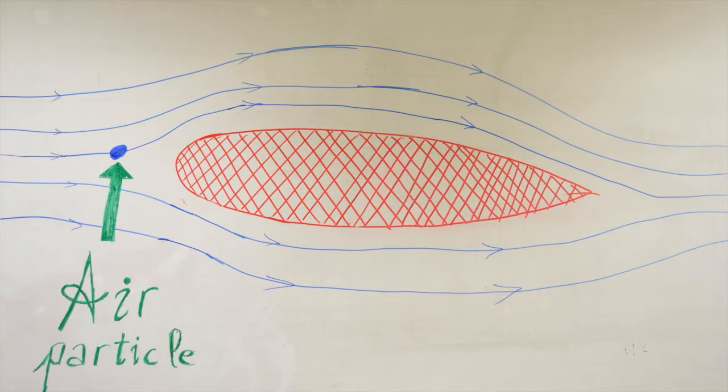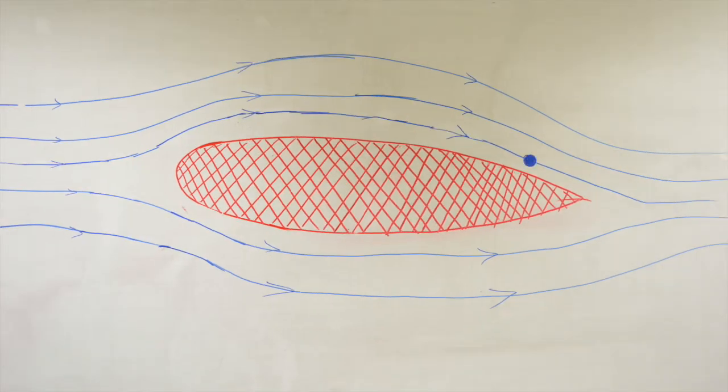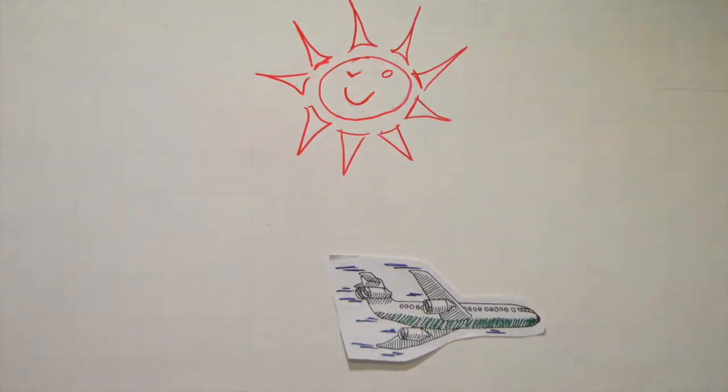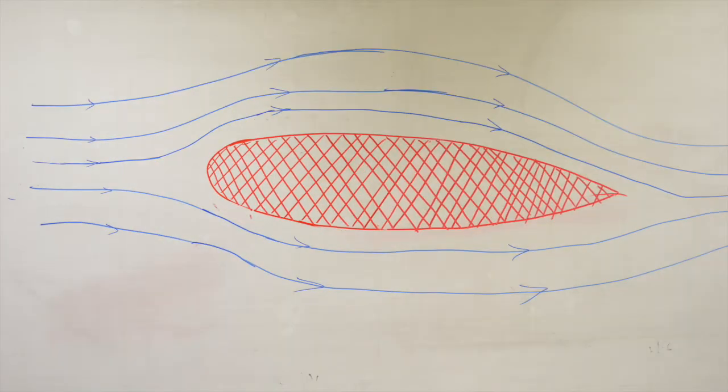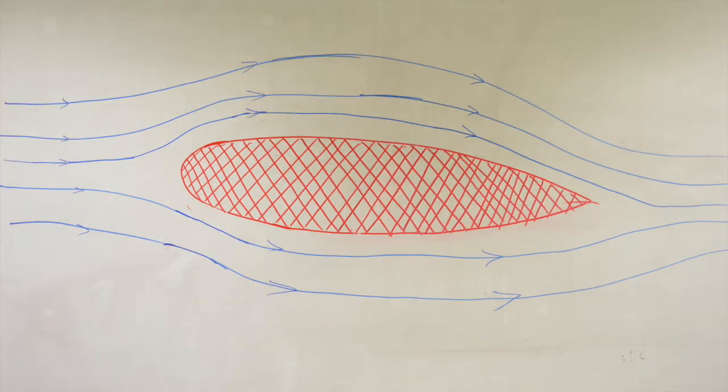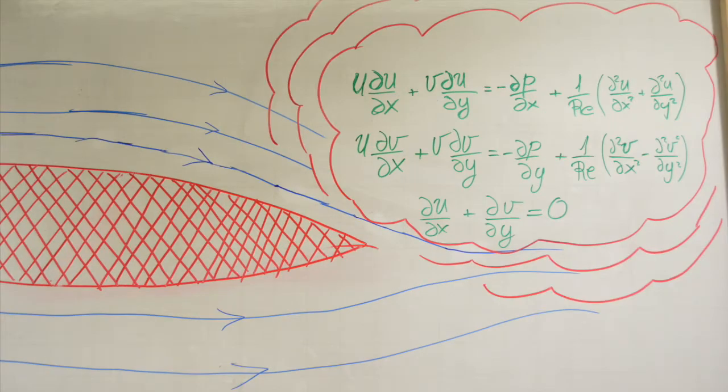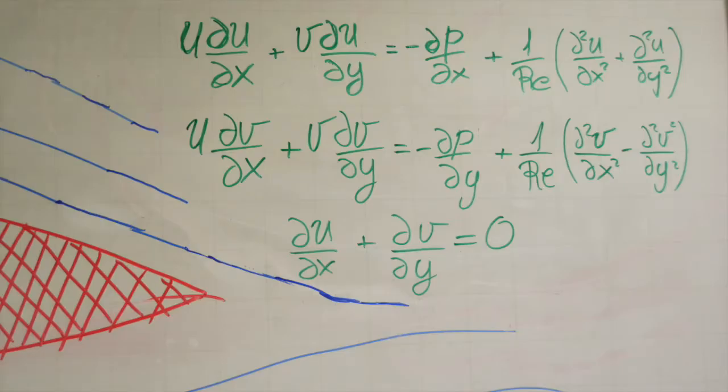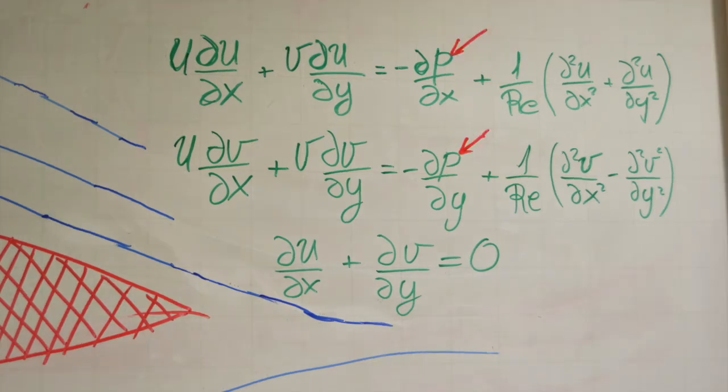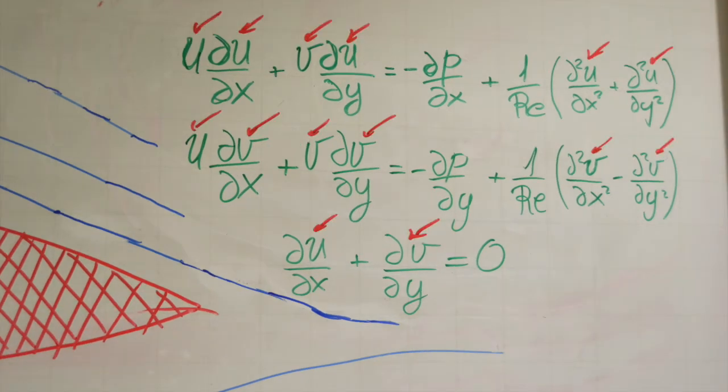A particle of air follows a trajectory called a streamline. Planes fly because of the airlift resulting from the weight that the air moves around the wings. This motion is described by the Navier-Stokes equations. We need to solve them to find the pressure and the velocity field that tells us how the air moves.